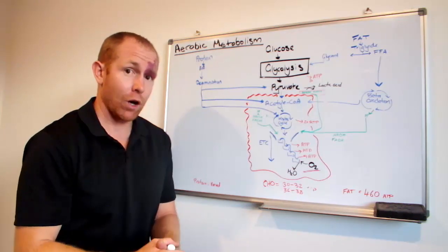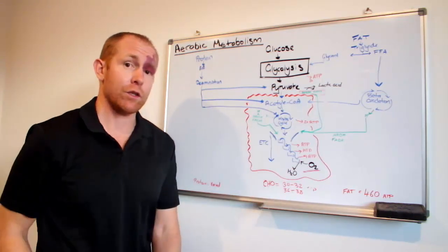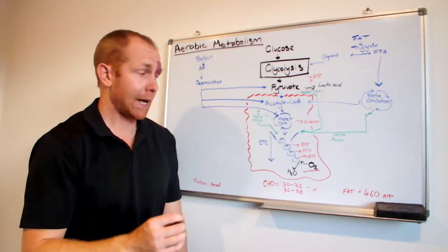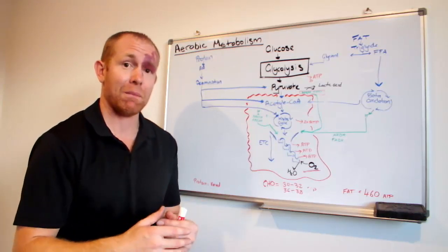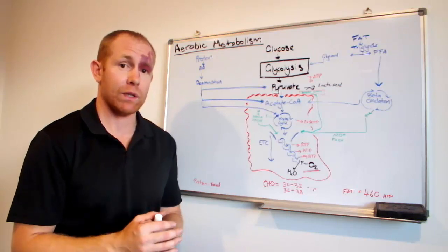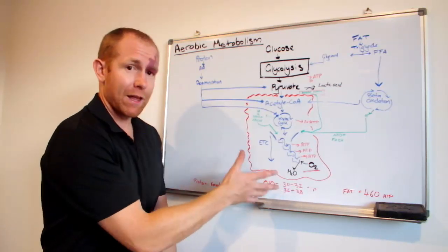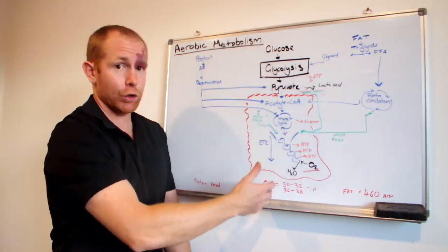36 to 38 are the old ranges. 30 to 32 are the new ranges. And the difference in those ranges comes back to transporters and how much energy those transporters use to get that energy out of the cell. So about 30 ATP from glucose or carbohydrate.